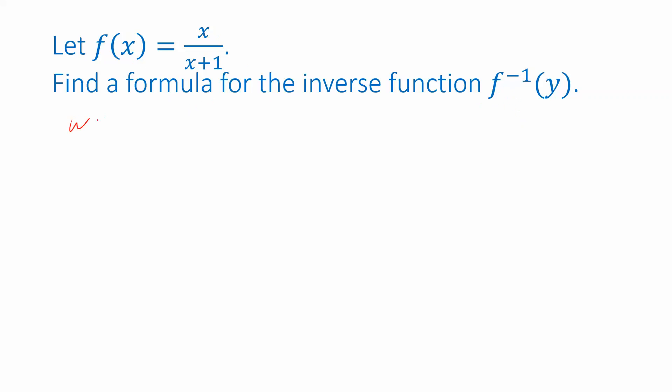So what do I plug in for x if I want x over x plus 1 to give me y? So this example is going to involve slightly trickier algebra but let's see how it works out. First of all I want to isolate x so I'm going to have to clear the fraction here. I'm going to multiply both sides of this equation by the denominator x plus 1.